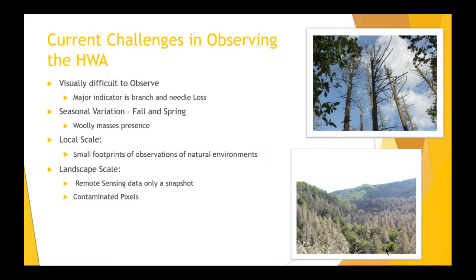Some of the current challenges in observing the hemlock woolly adelgid: discovery truly depends on someone on the ground who happens to spot some of the telltale signs once they become apparent on a tree. Some of those signs include gray-tinted needles, needle loss, and branch dieback.